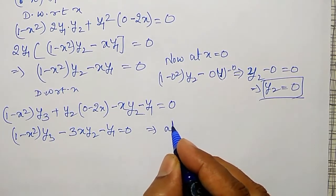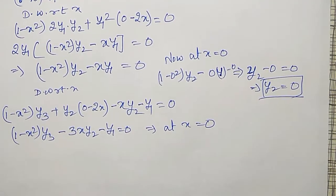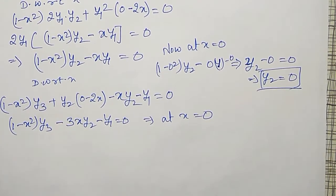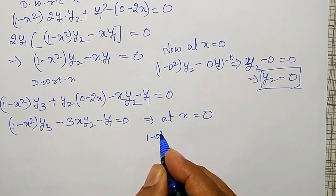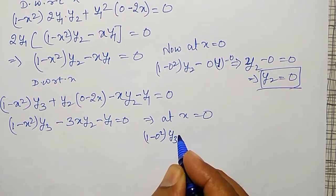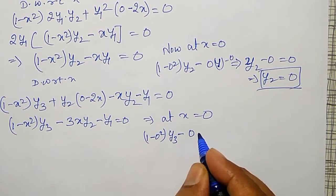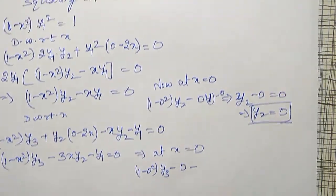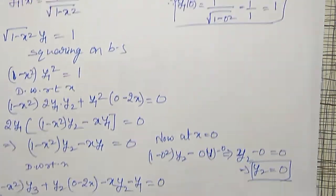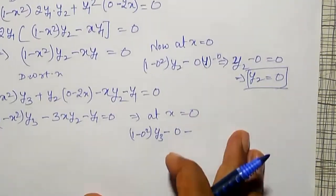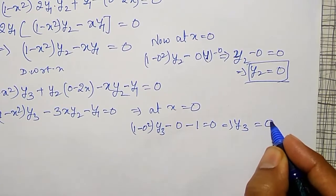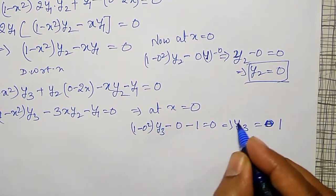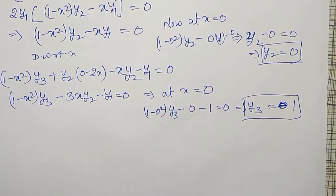At x = 0: (1 − 0)·y₃ − 0 − y₁(0) = 0, so y₃ = y₁(0) = 1. Therefore y₃(0) = 1, which is a non-vanishing term. Now we have two non-vanishing terms; we need one more.